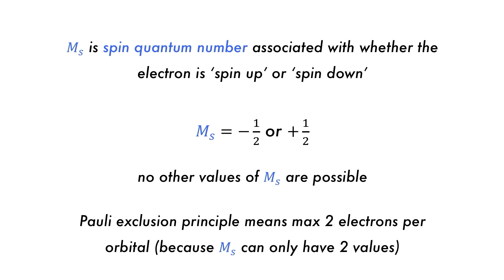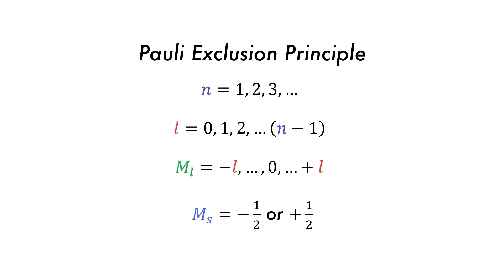Because of the Pauli exclusion principle, no two electrons can have the exact same set of four quantum numbers. As a result, there can only ever be two electrons in each orbital because there can only ever be two different values of ms: plus a half or minus a half.